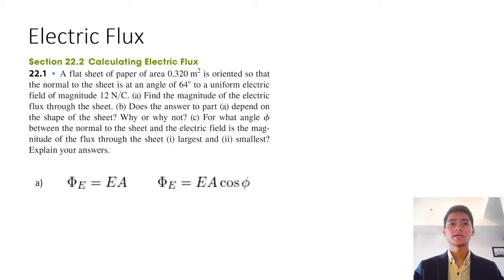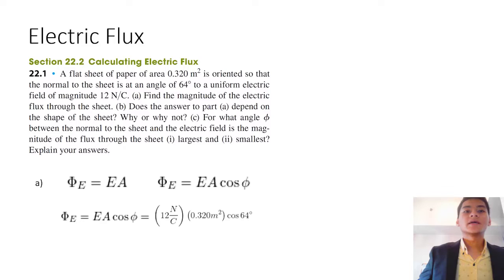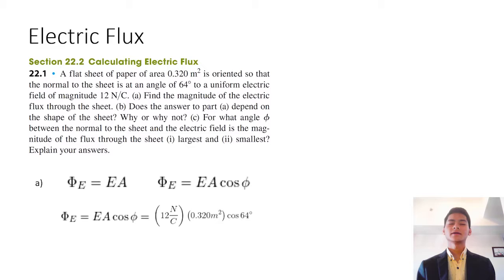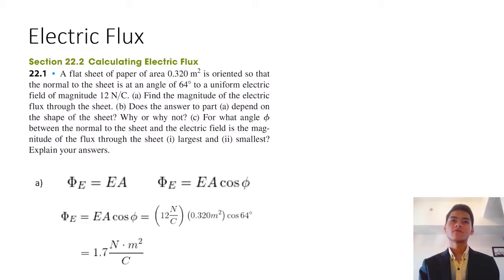Since we are given an angle of 64 degrees, we use EA cosine phi. Plugging in the values, we get 12 newtons per coulomb — that is the electric field — times the area of 0.320 square meters, multiplied by cosine of the angle. We get 1.7 newton meters squared per coulomb. Note that this is the unit for electric flux.